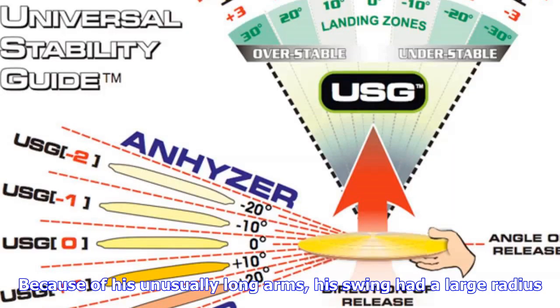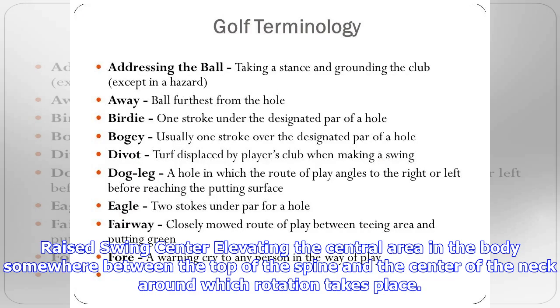Open grip: also referred to as a weak grip, it is when the hands are turned counterclockwise on the club. His open grip made it difficult for him to hook the ball.